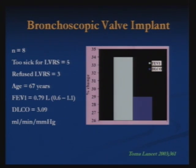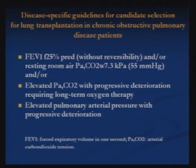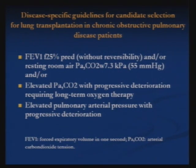In a small study of valve implants in eight patients too sick or refusing LVRS, FEV1 increased by 34 percent and DLCO increased by about 30 percent. Indications for lung transplantation include: FEV1 of 25 percent of predicted without reversibility, resting room-air PCO2 of 55 mmHg or more, elevated PAO2 with progressive deterioration requiring long-term therapy.